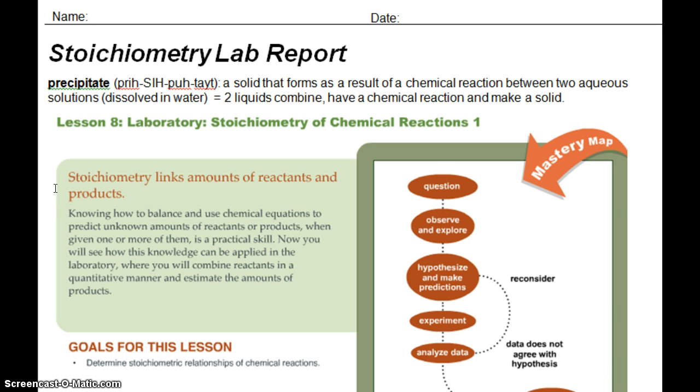Stoichiometry links amounts of reactants and products. So in other words we're going to talk about how much of each element is present before the reactant and after the product, a chemical reaction. Knowing how to balance and use chemical equations to predict unknown amounts of reactants or products when given one or more of them is a practical skill. Now you will see how this knowledge can be applied in the laboratory where you will combine reactants in a quantitative manner and estimate the amounts of product.